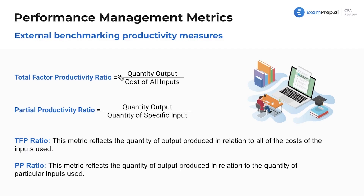These are just formulas to memorize. The total factor productivity ratio is quantity output divided by cost of all inputs, and then the partial productivity ratio is quantity output divided by quantity of a specific input. The TFP — total factor productivity — reflects the quantity of output produced in relation to the cost of all inputs used, whereas the partial productivity ratio is all output in relation to specific inputs.